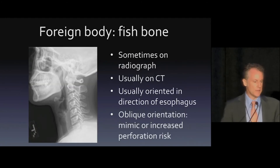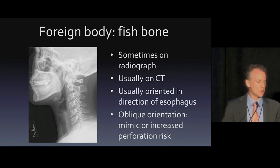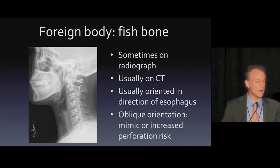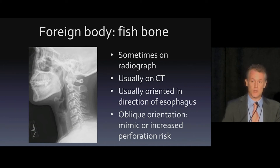Here's another thing we deal with quite often — a fishbone. We're moving towards CT more than radiographs; a lot of times clinicians get a radiograph and want a CT anyway, and we can see fishbones a lot better on CT. On CT they're usually oriented in the direction of the esophagus. There are a bunch of mimics in the head and neck — calcification of the sternal cartilage or other cartilages — that can make it difficult to tell whether there is a foreign body. Mimics are usually not oriented in the direction of the esophagus. If a foreign body is not aligned with the esophagus, there's actually a greater association with perforation because they tend to get stuck in the wall.